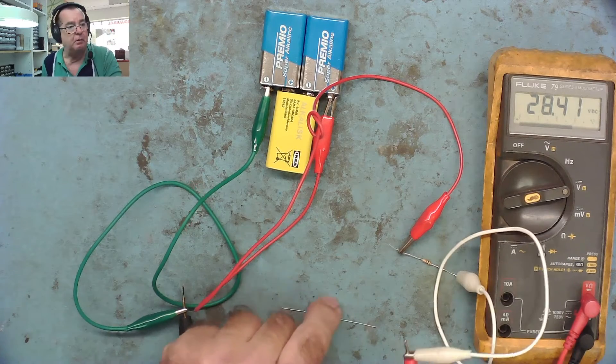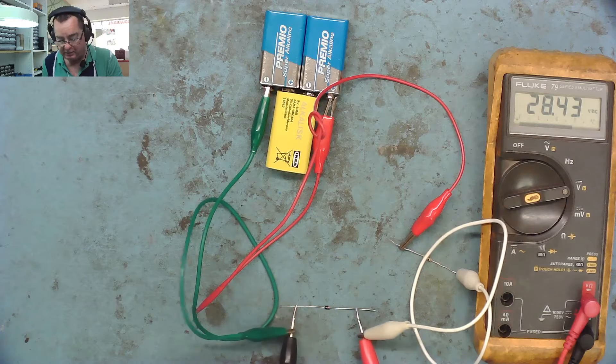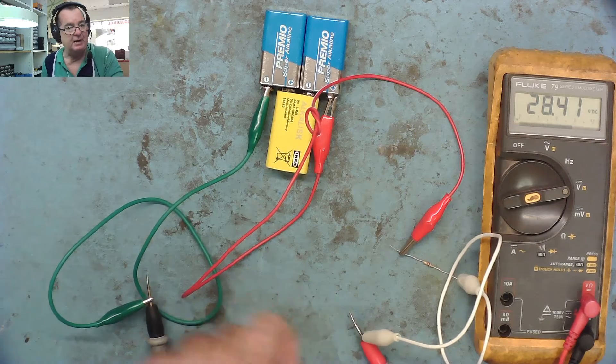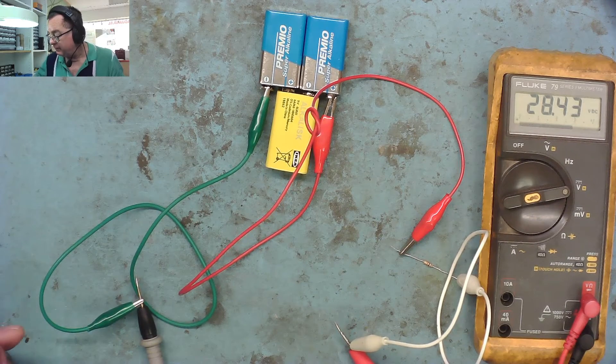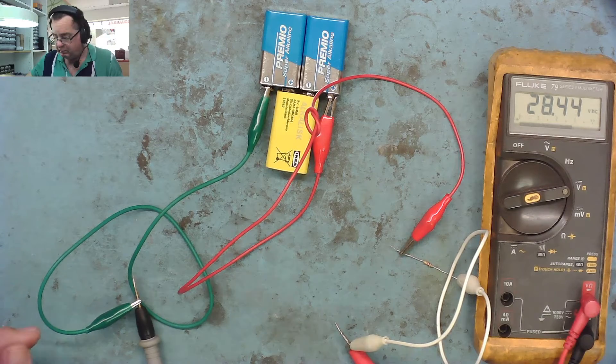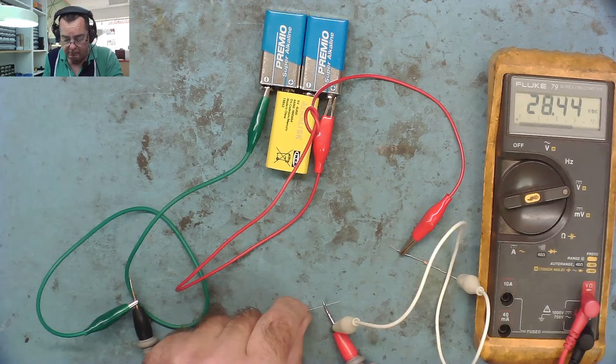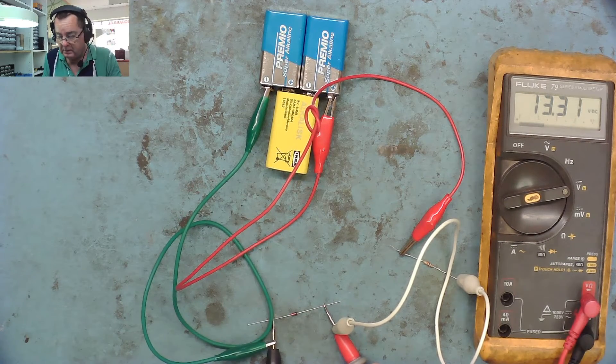If you by mistake connect the diode the wrong way round, all that will happen is you'll read about 0.6 to 0.8. The higher reading is the Zener voltage - that's a 4.3 to 4.5 volt. Now let's take another one. Again, the red wire to the stripe, the black wire. This is a 13-volt Zener.